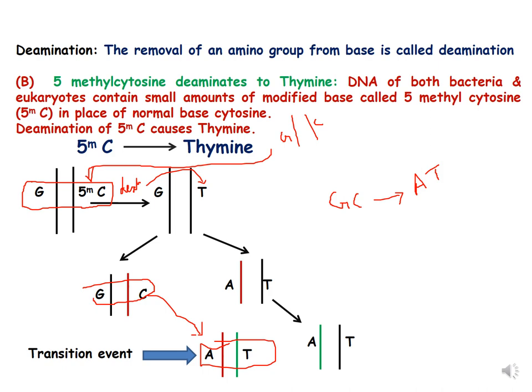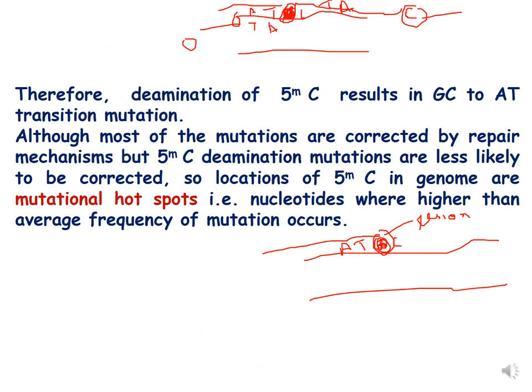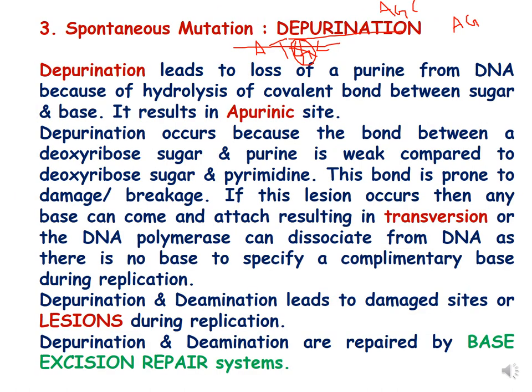We have discussed two examples of transition mutation in deamination. Deamination of 5-methylcytosine results in transition mutation, and most importantly, while most mutations are corrected by repair mechanisms, 5-methylcytosine mutations are less likely to be corrected. The locations of these 5-methylcytosine mutations in the genome are called mutational hotspots, because nucleotides at these locations have a higher frequency of mutation. The third mechanism of spontaneous mutation is depurination — the loss of a purine from DNA.